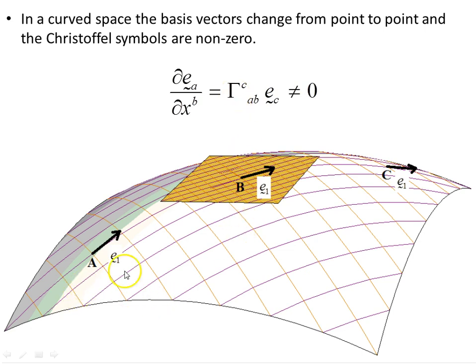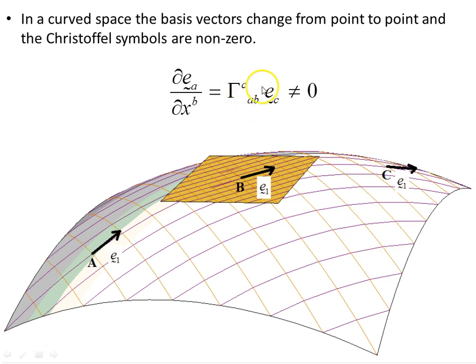Consider this surface as our manifold or space of interest. At point A there is a basis vector, at point B another basis vector, and at point C another. They change from point to point — they are not fixed as in Euclidean flat space. So in curved space they vary from point to point, and hence the Christoffel symbols of the second kind are non-zero.